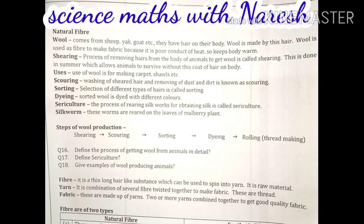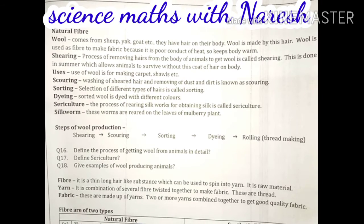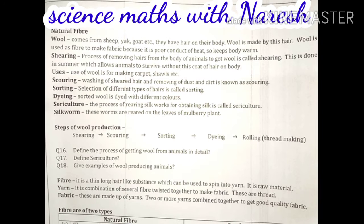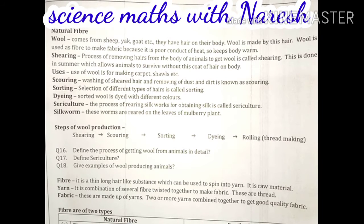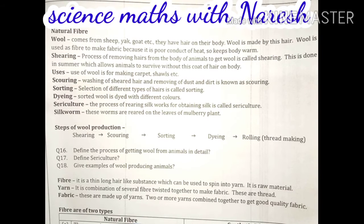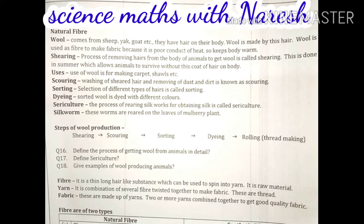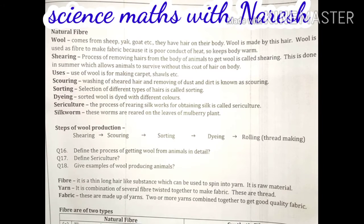The first process is shearing. The process of removing hairs from the body of animals to get wool is called shearing. This is done in summer, which allows animals to survive without this coat of hair on their body. Shearing is done in summer because, just as humans need to retain heat near their body in winter, animals also feel cold and need their hair in winter.